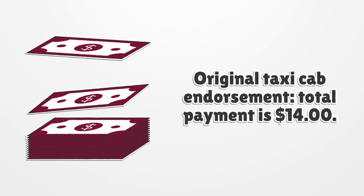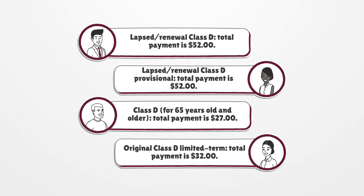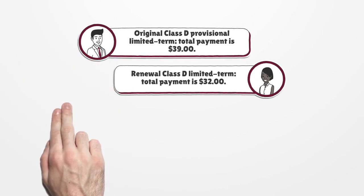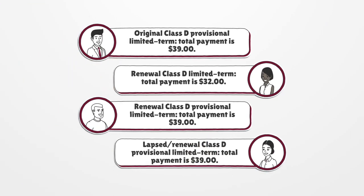Original Taxicab Endorsement total payment is $14. Late Store Renewal Class D total payment is $52. Late Store Renewal Class D Provisional total payment is $52. Class D for 65 years old and older total payment is $27. Original Class D Limited Term total payment is $32. Original Class D Provisional Limited Term total payment is $39.